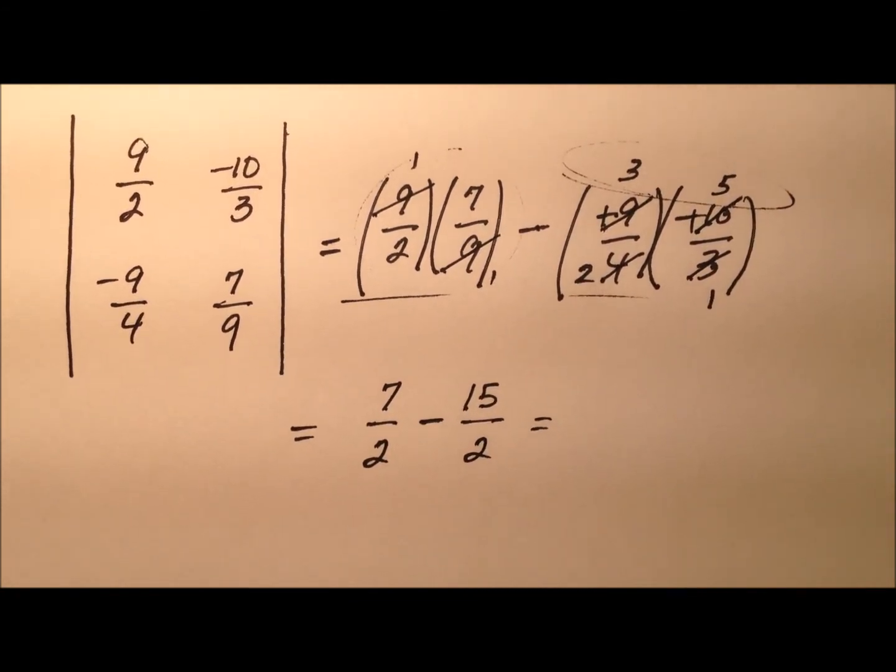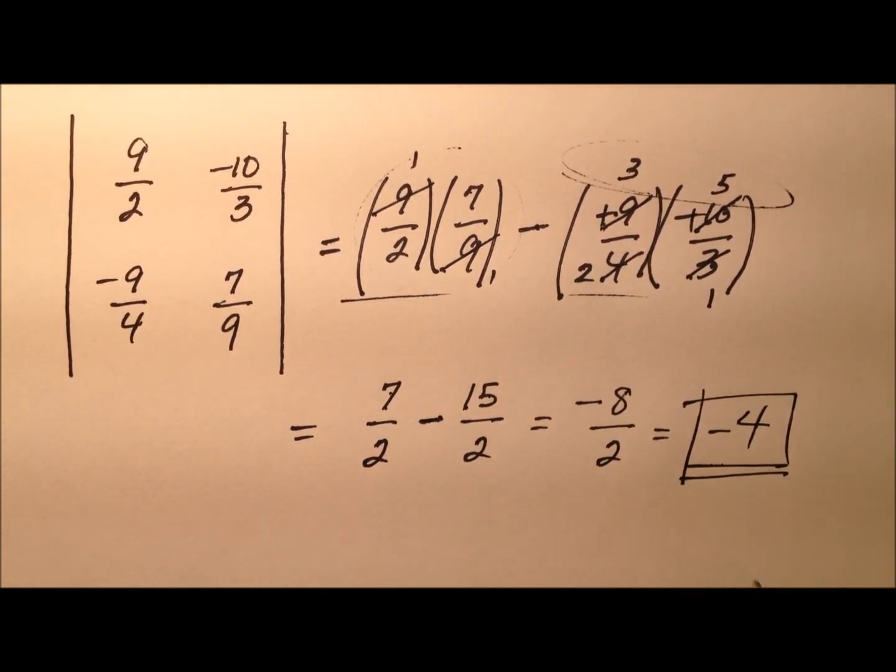Okay, so this is what I have now for our subtraction. And so, let's finish it off by subtracting. 7 minus 15 is negative 8 over that 2, which can be reduced to negative 4.